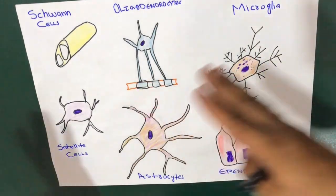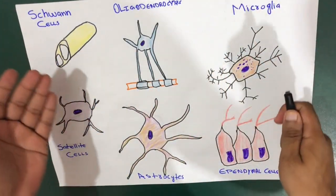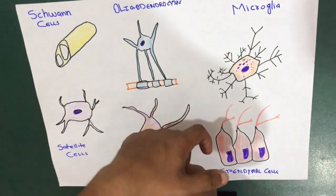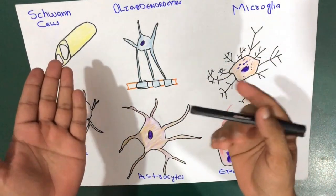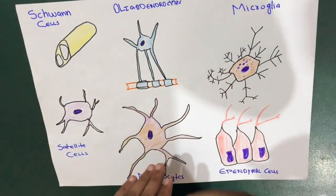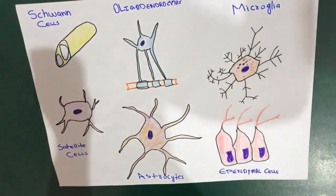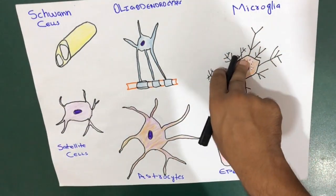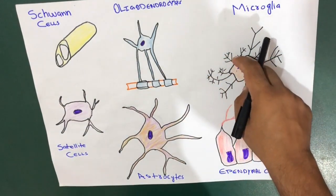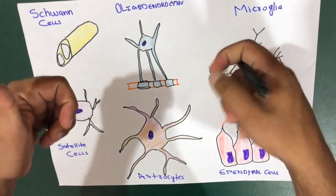This is all about today's topic on the types of neuroglial cells. If you need anything explained in an easier way, please leave a comment and let us know what you would like from Tiger Schooling. Thank you.